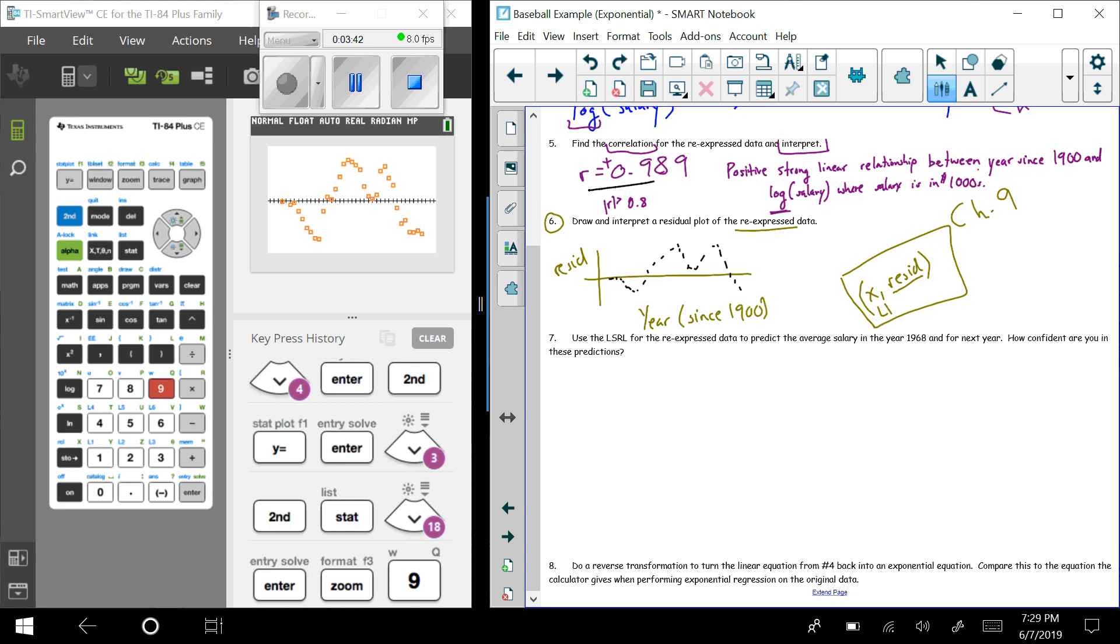But because the r value up here from our previous example is so high, we probably feel pretty good using this model. But know that here we really would want random scatter. And that's how you create a residual plot using your calculator and what you're looking for after you create it.